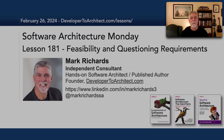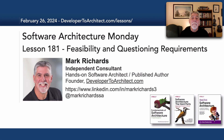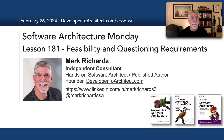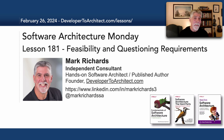This has been Lesson 181 — one of my favorite architectural characteristics: feasibility. It's really about questioning requirements to make sure they are true requirements and not a solution in disguise. That's our job as architects. Stay tuned in two more weeks for yet another lesson in Software Architecture Monday. Thanks for listening.